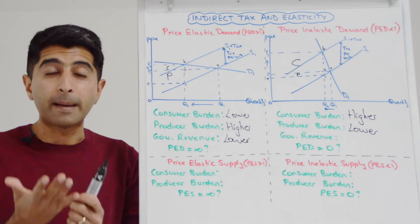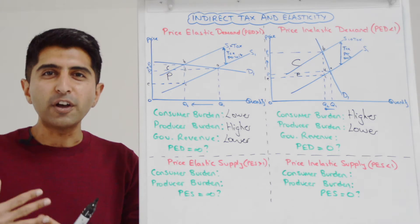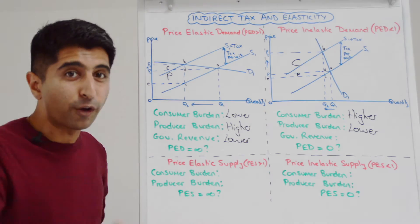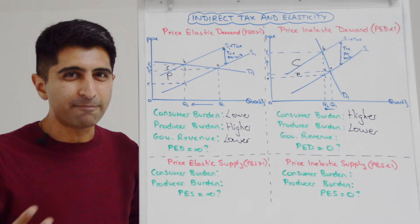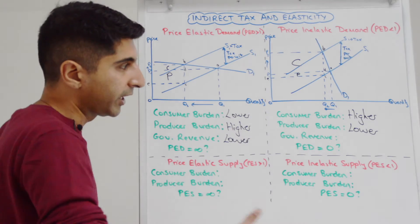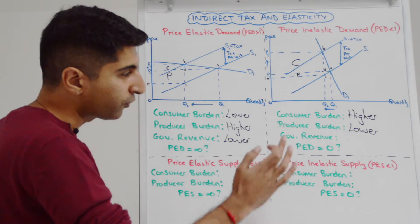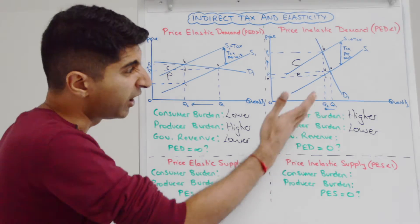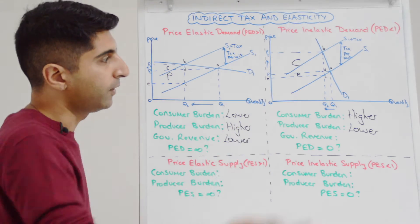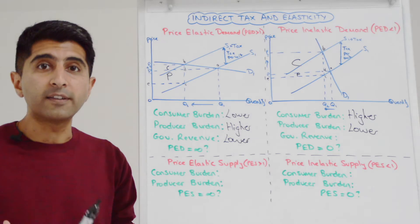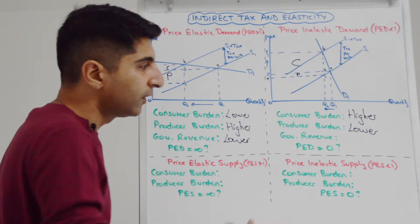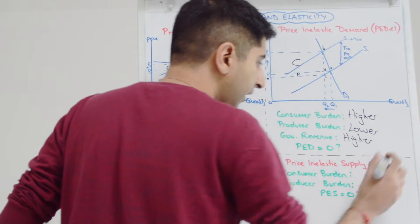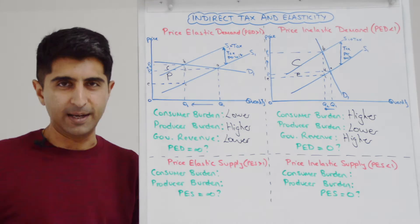This makes sense because with demand being price inelastic, producers feel they can raise their price a lot — they can transfer a lot of the indirect tax to consumers without a massive loss in demand or revenue. That's why the consumer burden is higher. We can also link this to government revenue: quantity hasn't fallen much, so there are still many units subject to the indirect tax, meaning government revenue will be higher when demand is price inelastic.